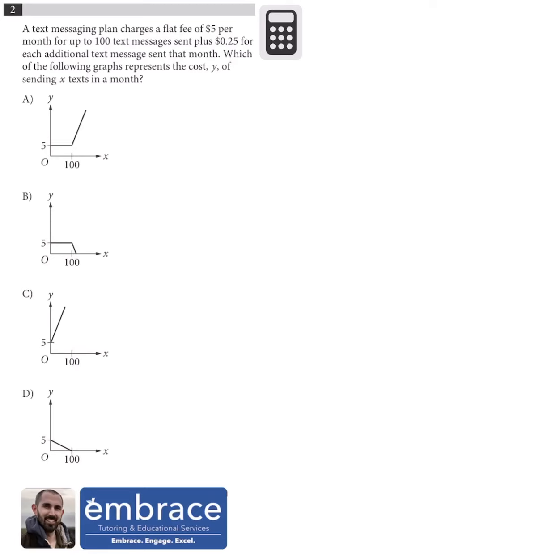Okay, let's get started. So for number two here, it says a text messaging plan charges a flat fee of $5 per month for up to 100 text messages sent, plus 25 cents for each additional message sent that month. Which of the following graphs represents the cost Y of sending X texts in a month.